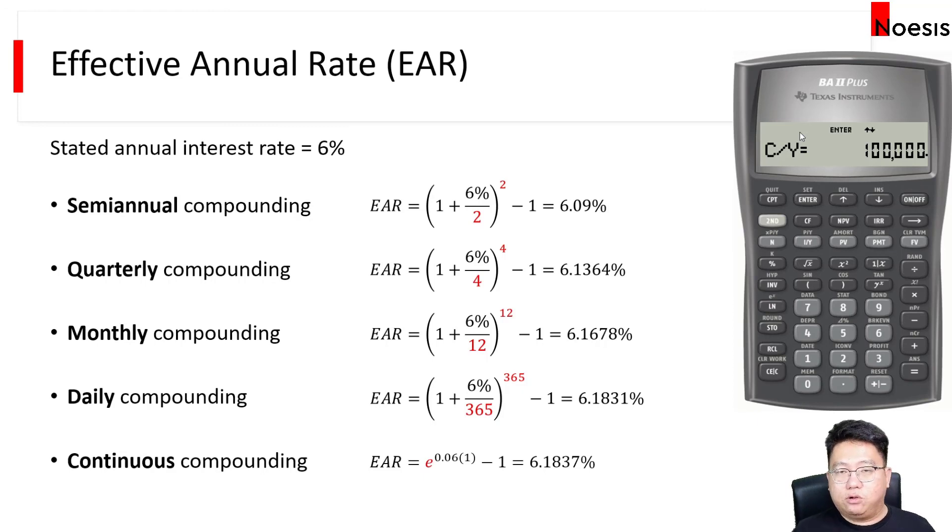You can substitute the nominal rate, type it in, and then try different compounding frequency and see which one gives you the effective rate that you are looking for, that matches the one in the question. So that's one way to tackle that.